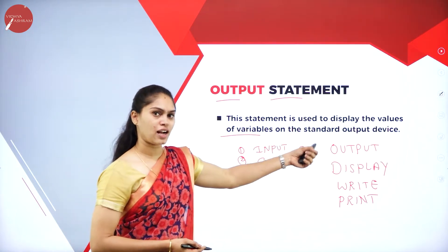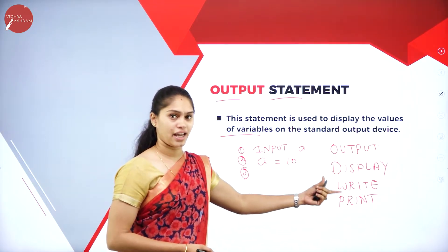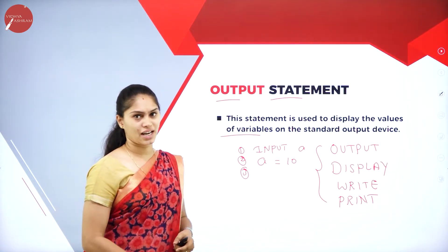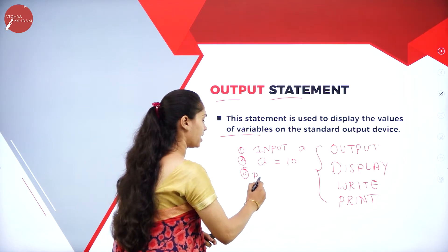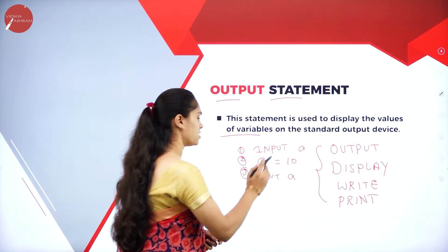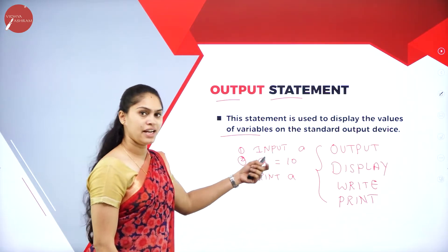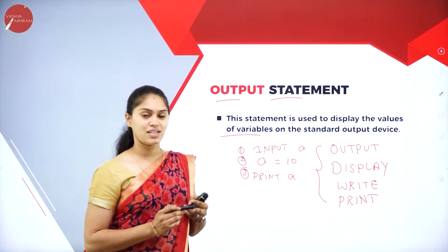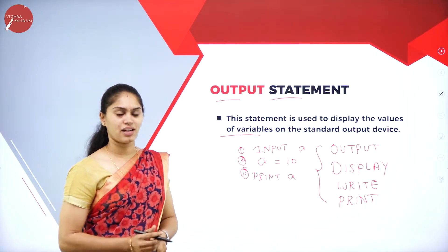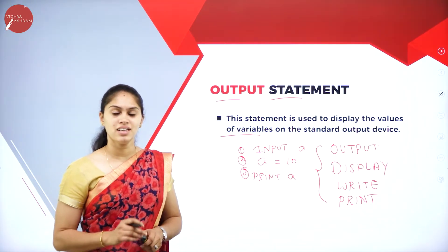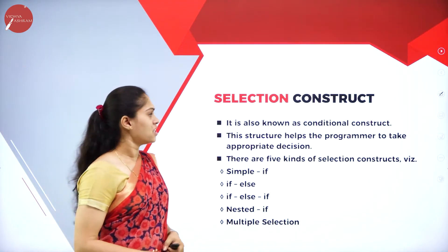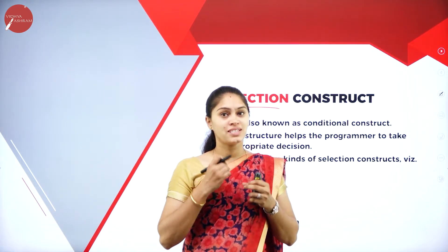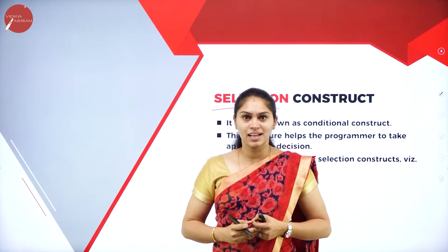The flowchart of simple if uses a rhombus for the decision. From the entry point, the condition is tested. If true, statement 1 executes (rectangular processing box). If false, statement 1 is skipped. Either way, control continues to the next statements. This is the working procedure of the simple if construct.